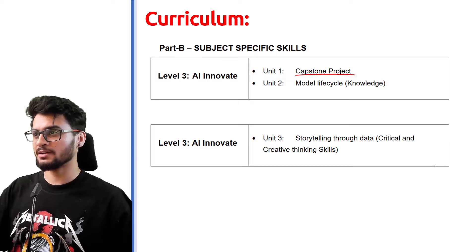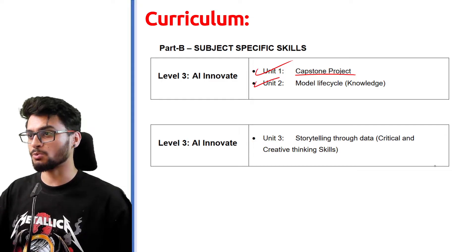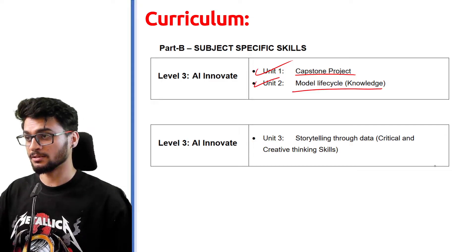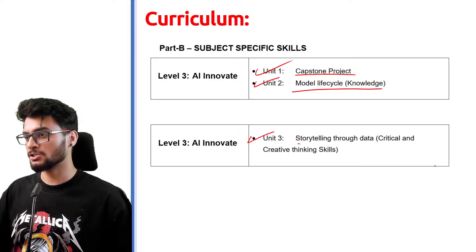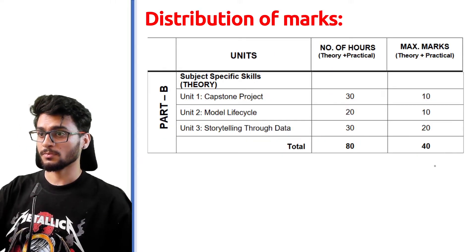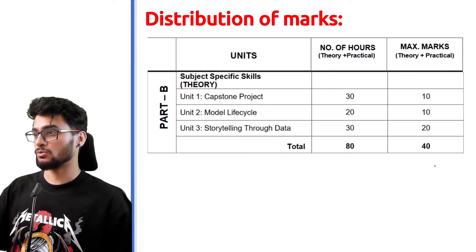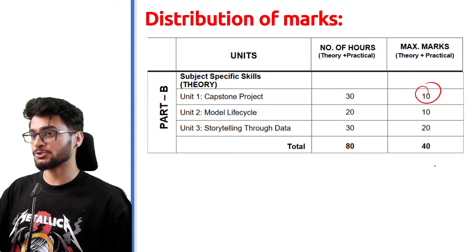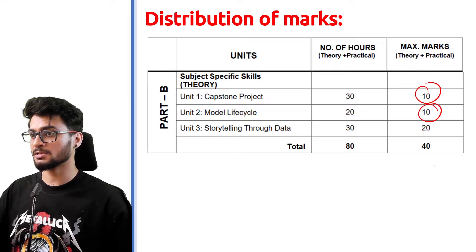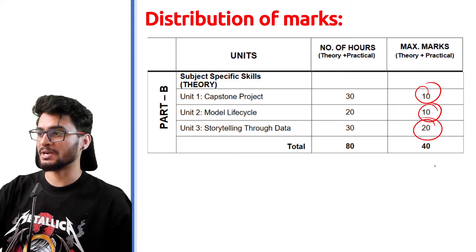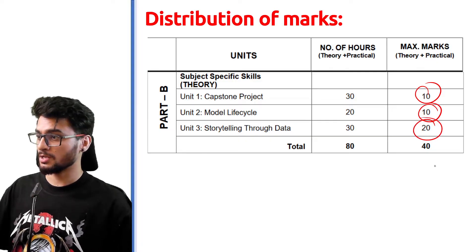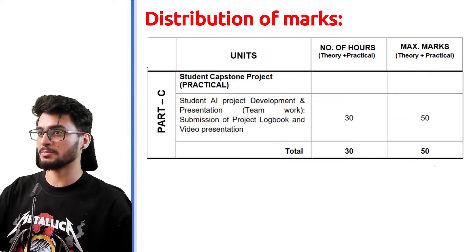There are three units: Unit 1 is the Capsule project (10 marks), Unit 2 is Model Life Cycle (10 marks), and Unit 3 is Storytelling Through Data (20 marks), making a total of 40 marks.